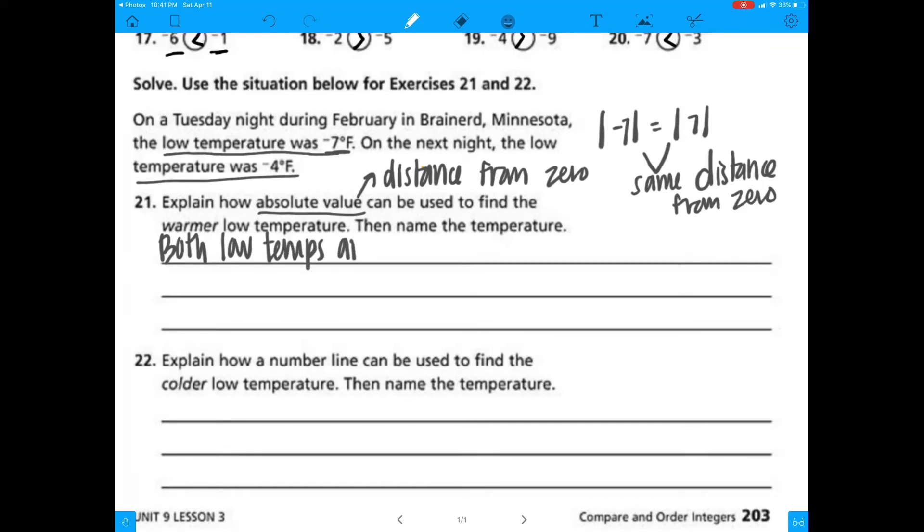Both of these temperatures, negative 7 and negative 4, they are below 0. So the warmer temperature is going to be closer to 0. The warmer temperature will have a smaller or lesser absolute value. So negative 4, that has an absolute value of 4. Negative 7 has an absolute value of 7. So the temperature of negative 4 was actually warmer.